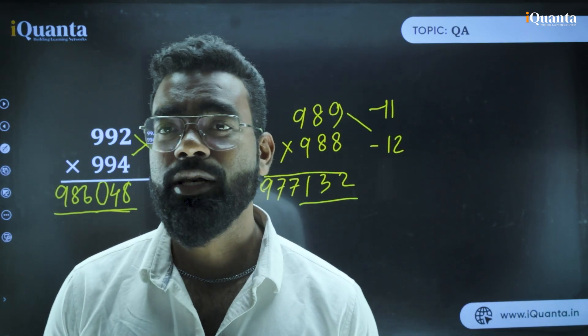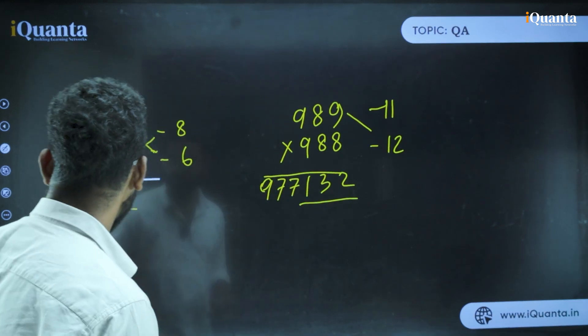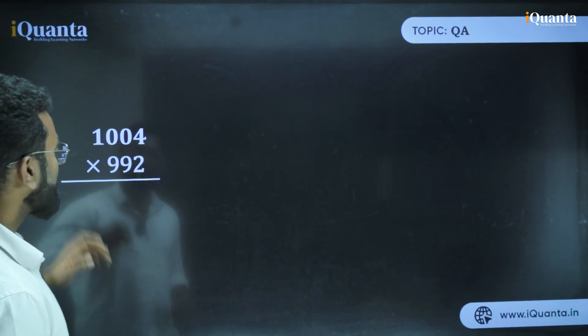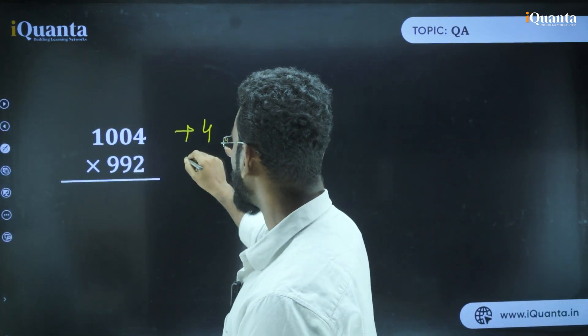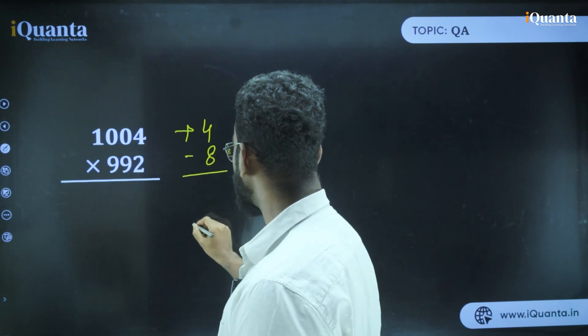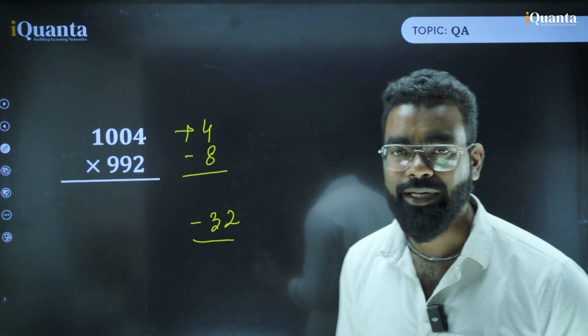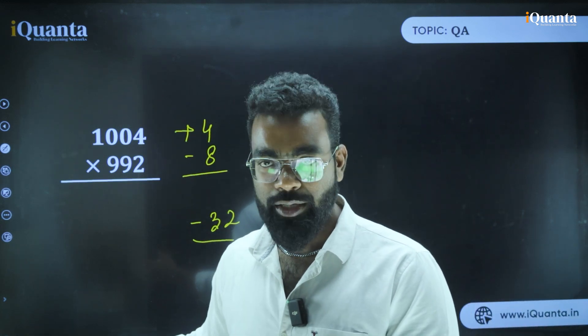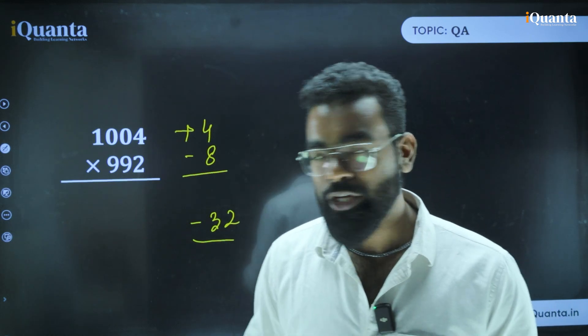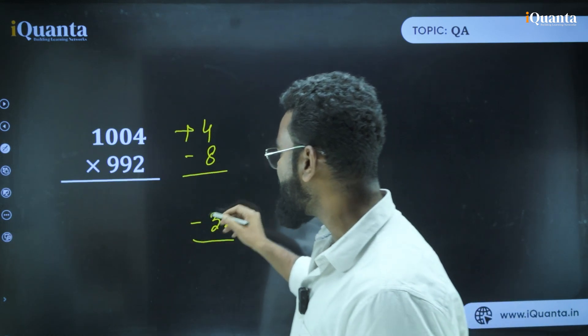Now the third case is when one number is more than 1000 and one number is less than 1000. So let's see how we can solve this type of question. Now think about 1004 into 992. This is plus 4 and this is minus 8. So 4 into minus 8 basically gives you minus 32. But think about it. You cannot have a negative number inside a number. There is no possibility of a number like 1, 2, 3, minus 4, 5. The minus has to be before or if there is a minus, you need to make it a positive thing.